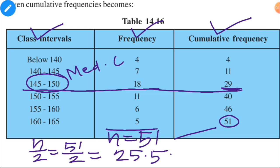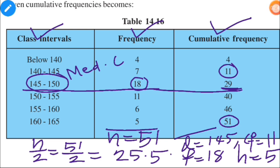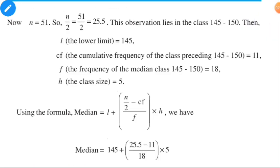After finding the median class, we identify the values: L is the lower limit of the median class, which is 145. F is the frequency of the median class, which is 18. CF is the cumulative frequency of the class preceding the median class, which is 11. H is the class size, which is 5. Now we apply the formula: Median = L + (n/2 − CF) / F × H.